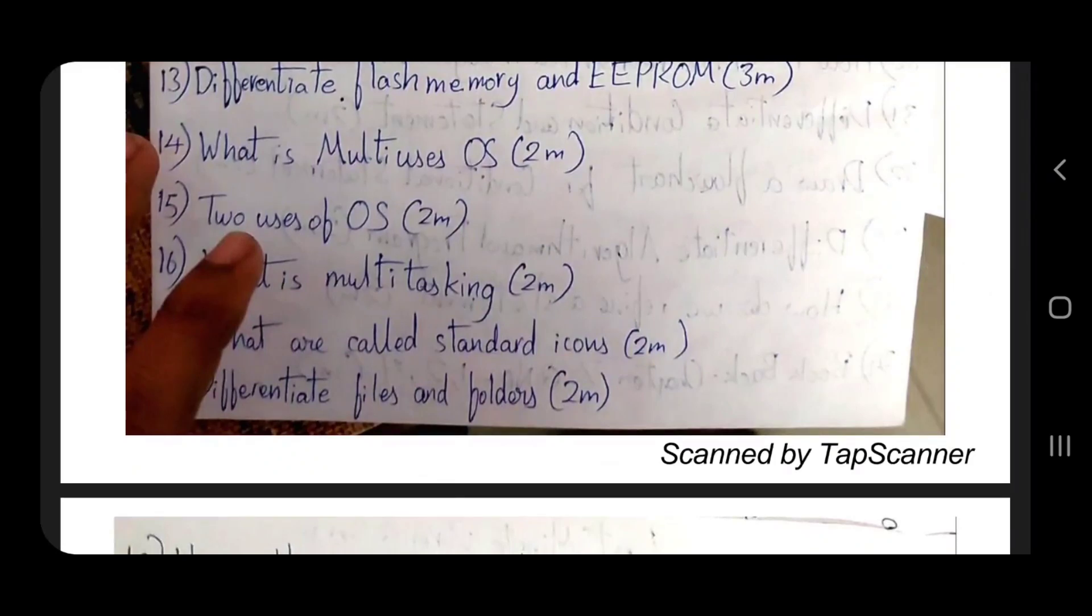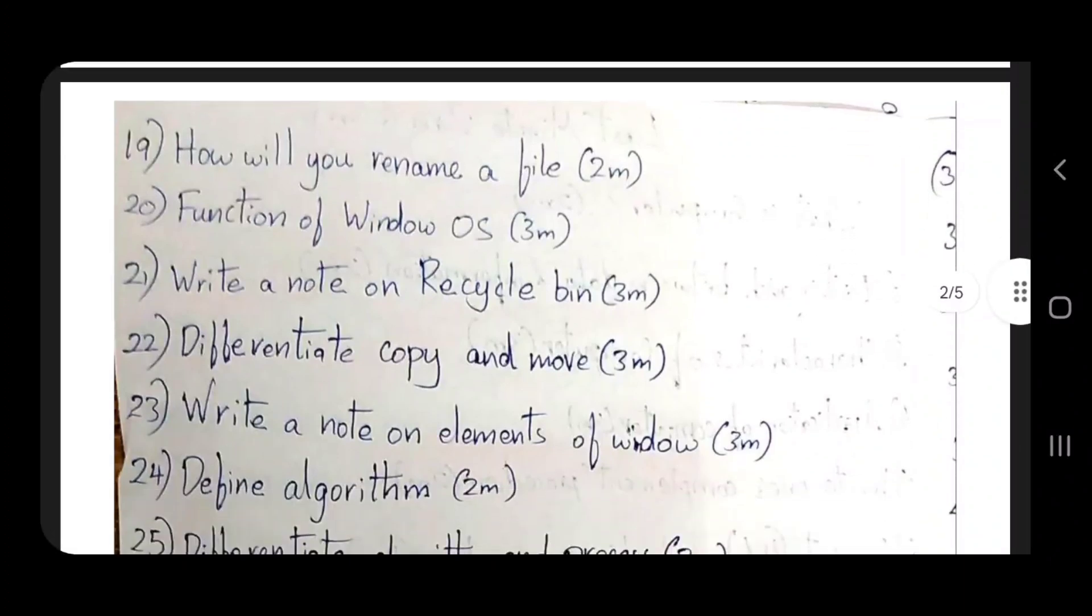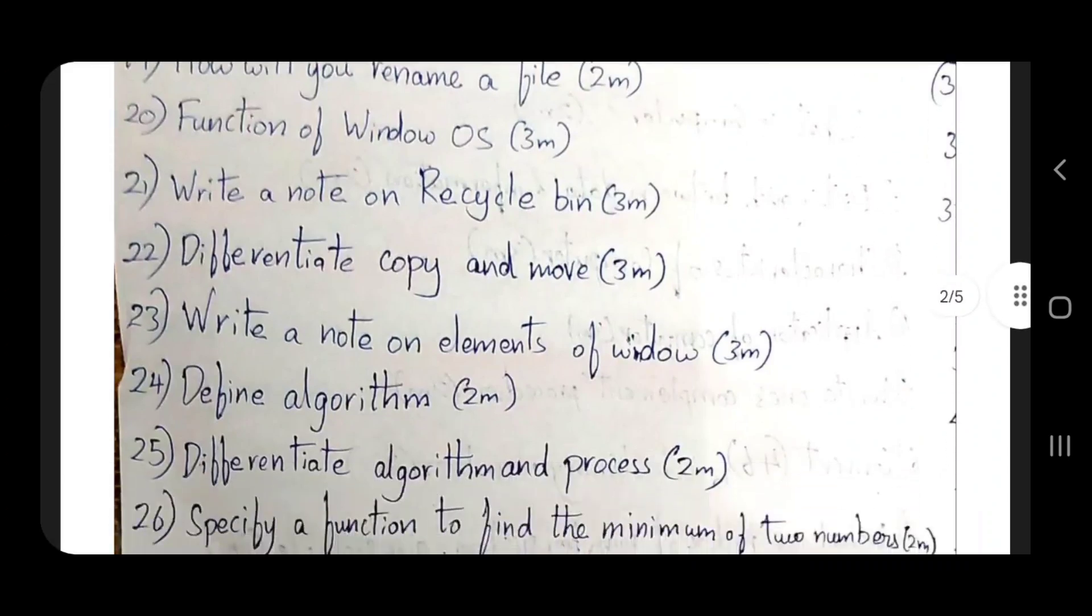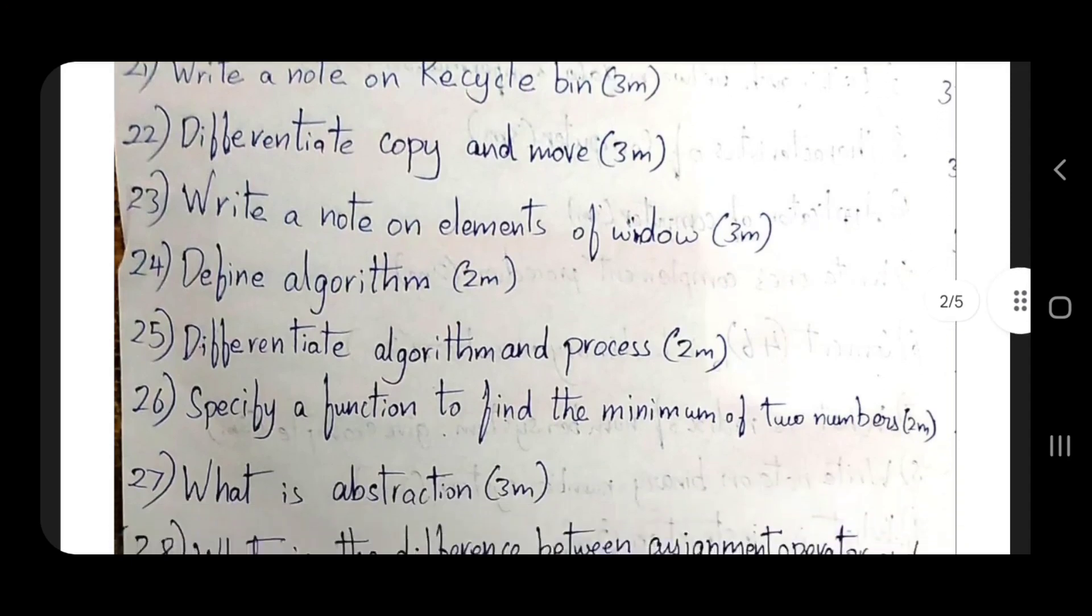Differentiate files and folders - very, very important. How will you rename a file? Function of Windows OS. Write a note on recycle bin. This is the second unit. Differentiate copy and move. Write a note on elements of window. So it is all the second unit, 23 questions.